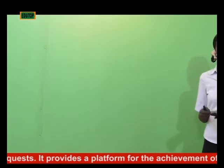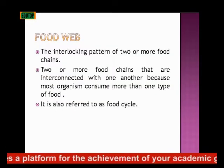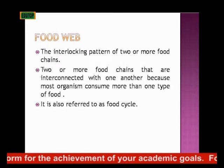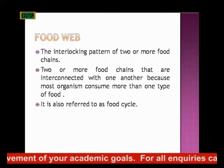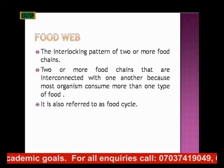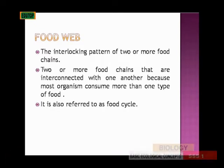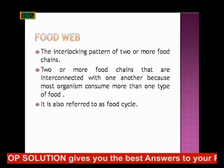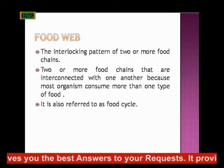We now move on to what we call a food web. A food web is an interlocking pattern of two or more food chains. When you have two or more food chains interlocking — that is, intersecting and joining at a particular point — then you have what is called a food web. A food web is bigger than a food chain, consisting of two or more food chains that interlock or intersect at a particular point.